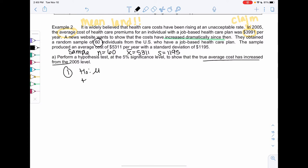Let's go ahead and perform a hypothesis test at 5% to show the true average cost has increased. My H0 and H1 should have mu, because we're in mean land. Mu has increased from the 3,991. So mu greater than 3,991 will be H1, and then H0 will just be equal. Alpha is 0.05 for 5%.